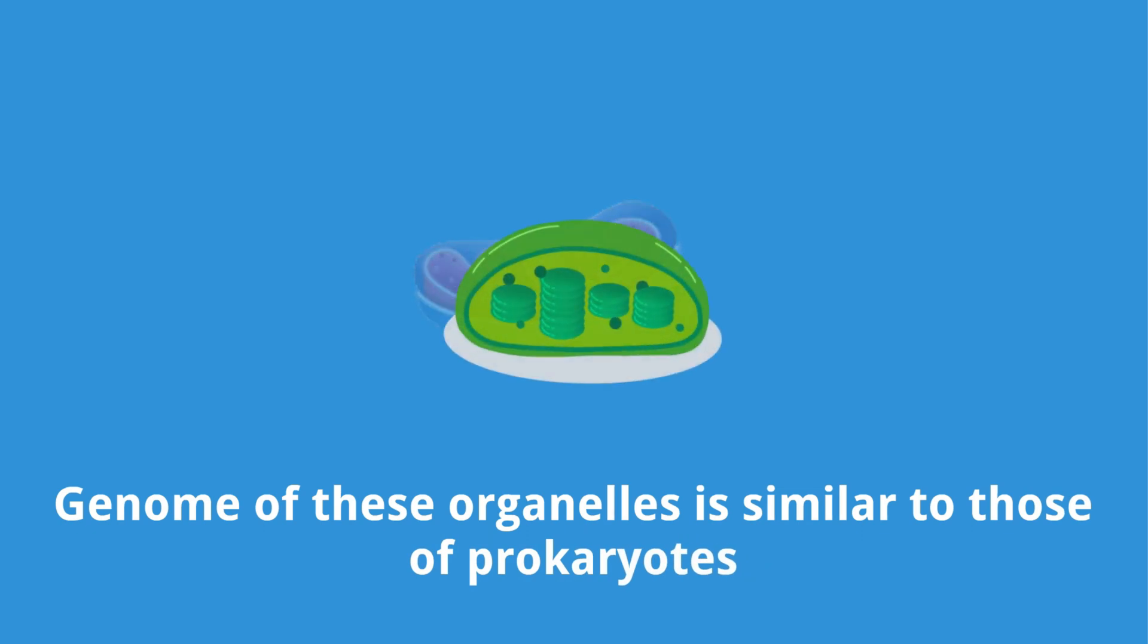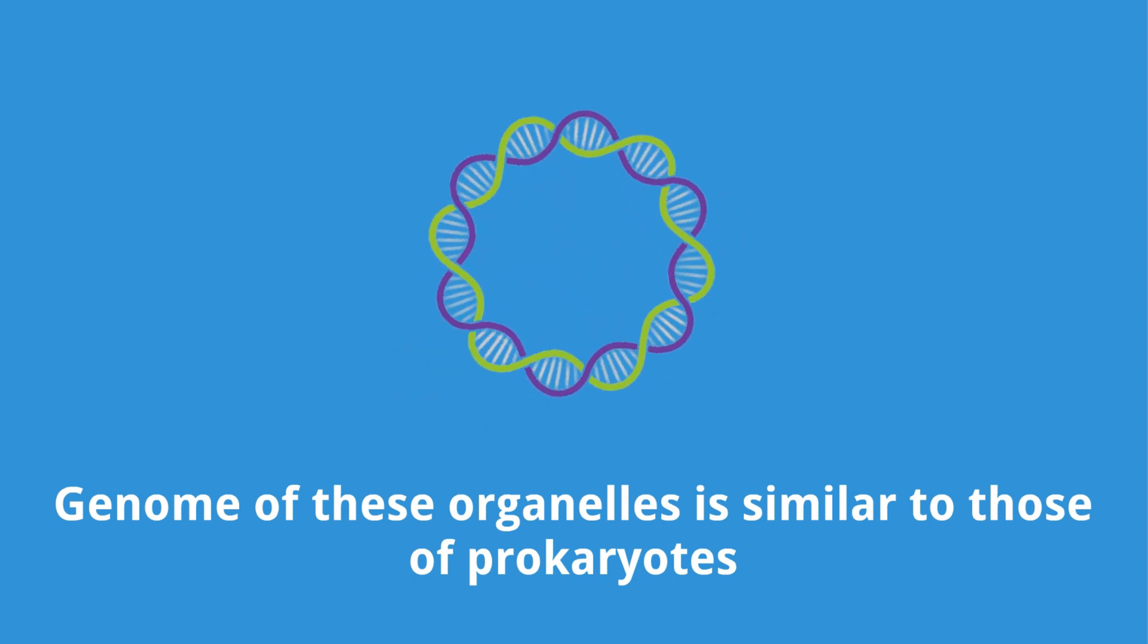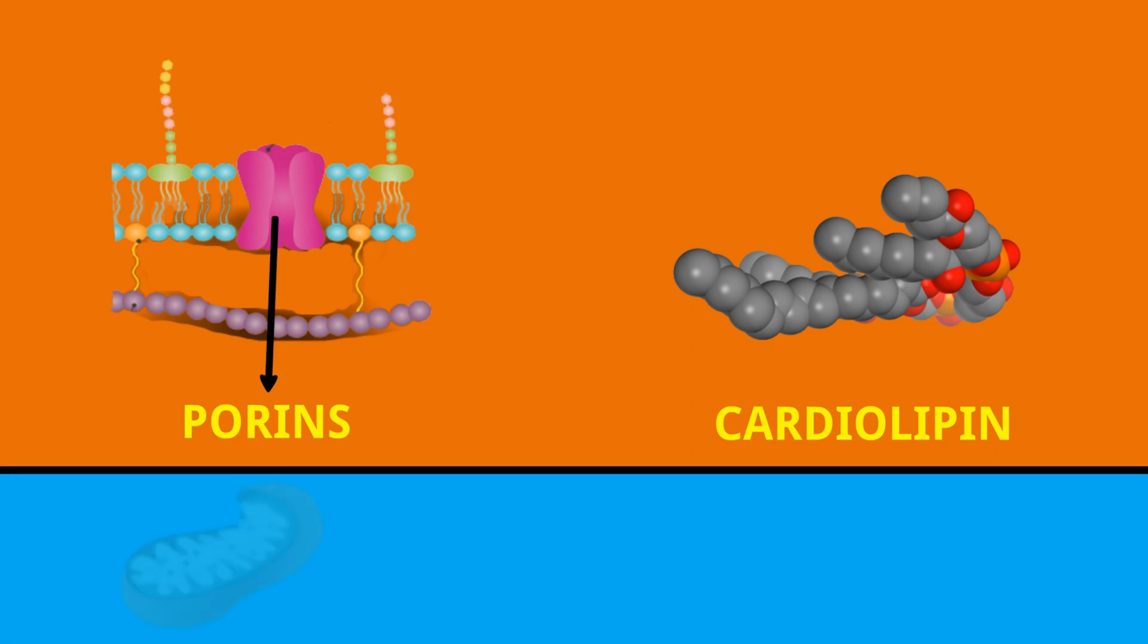Mitochondria, chloroplasts, and bacteria can all have a single circular DNA molecule. In addition, porins and cardiolipin are only found in mitochondria, chloroplasts and bacteria.